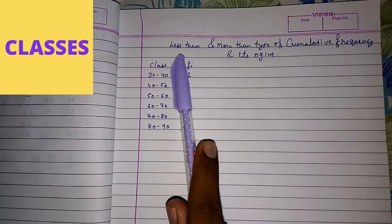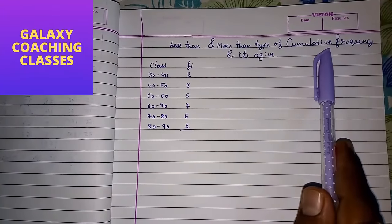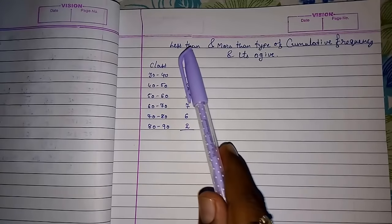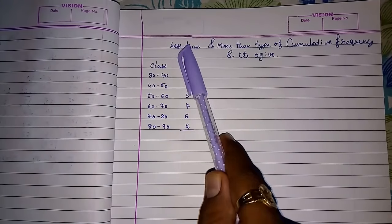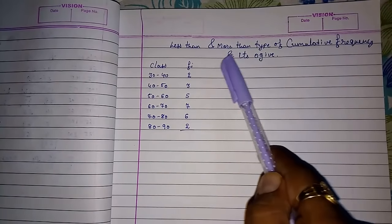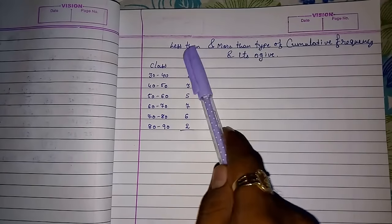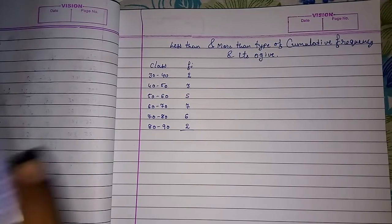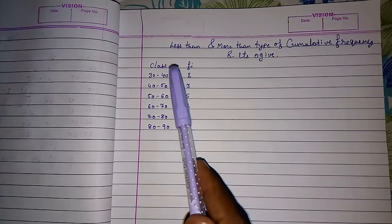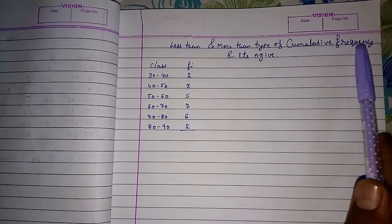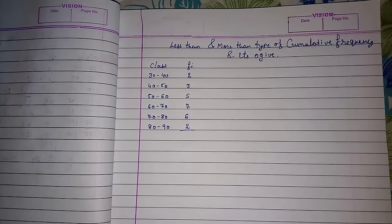Hello friends. Today we are going to study about less than and more than type of cumulative frequency, and then we are going to draw its ogive also. We can find the median using less than type, more than type, or both together. Previously we were using a formula, but graphically also we can find the median. We are learning this less than and more than type of ogive for finding the median graphically.